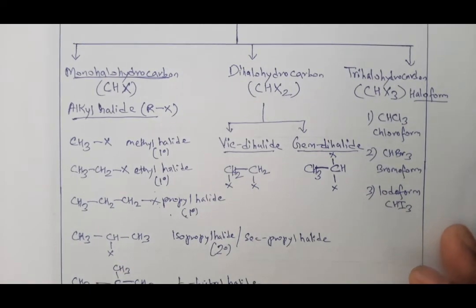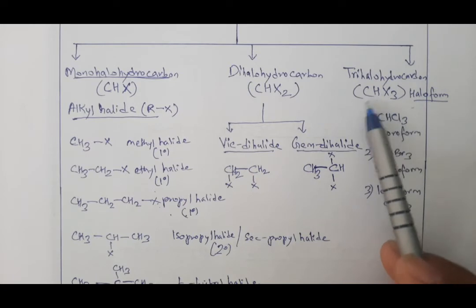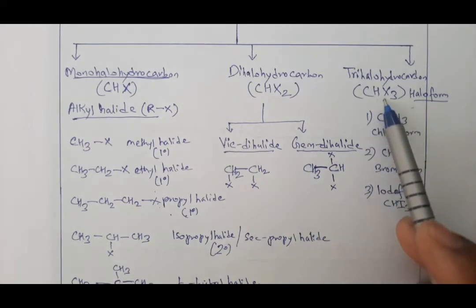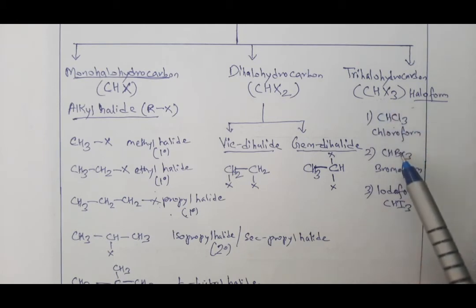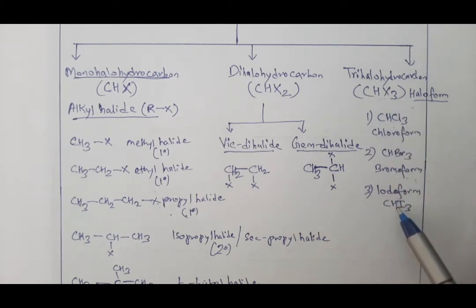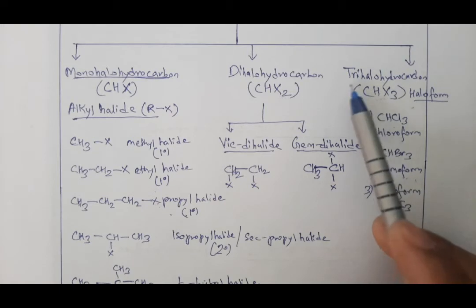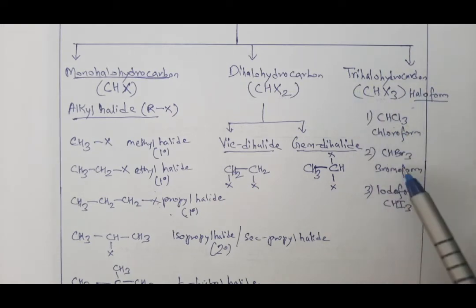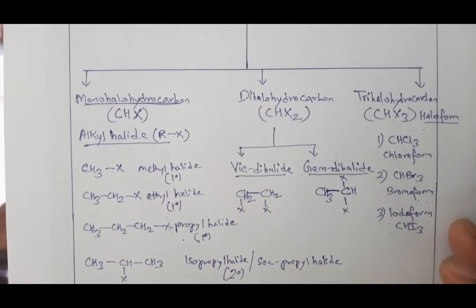Trihalo hydrocarbon is also known as haloform. If X is replaced with chlorine, it becomes chloroform; with bromine, bromoform; with iodine, iodoform. So chloroform, bromoform, and iodoform are examples of trihalo hydrocarbon. This completes the classification of haloalkane.